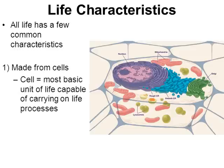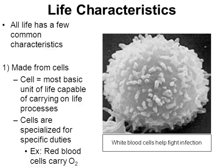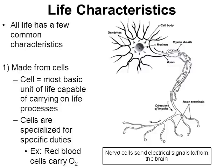One of the things that all life has in common — from the simplest form of life such as bacteria to the most complex organisms like humans — is that all life has at least one cell. A cell is the most basic unit of life capable of carrying on life processes. Over time, cells have become specialized to perform certain duties: red blood cells carry oxygen, white blood cells help fight infection against bacteria and viruses, and nerve cells (neurons) send electrical signals to and from the brain.